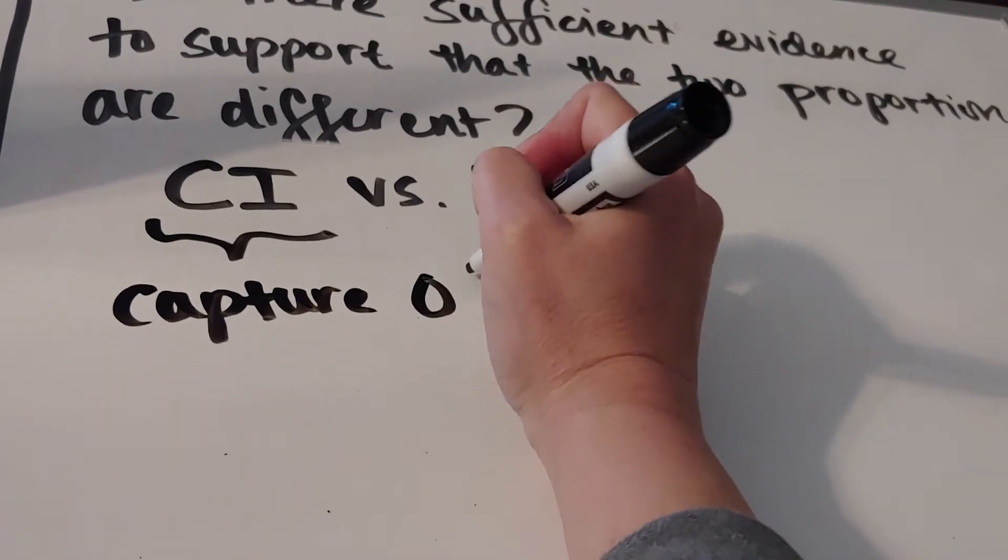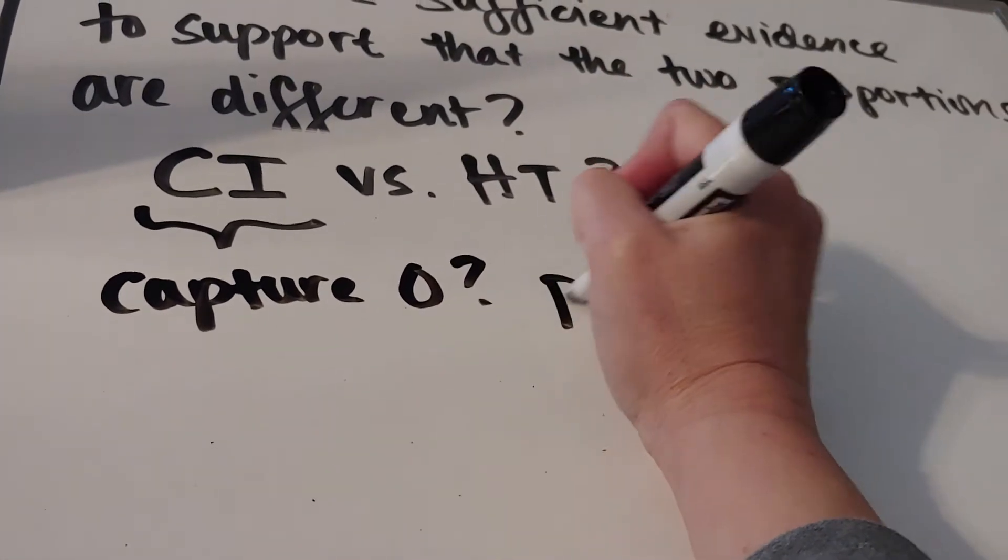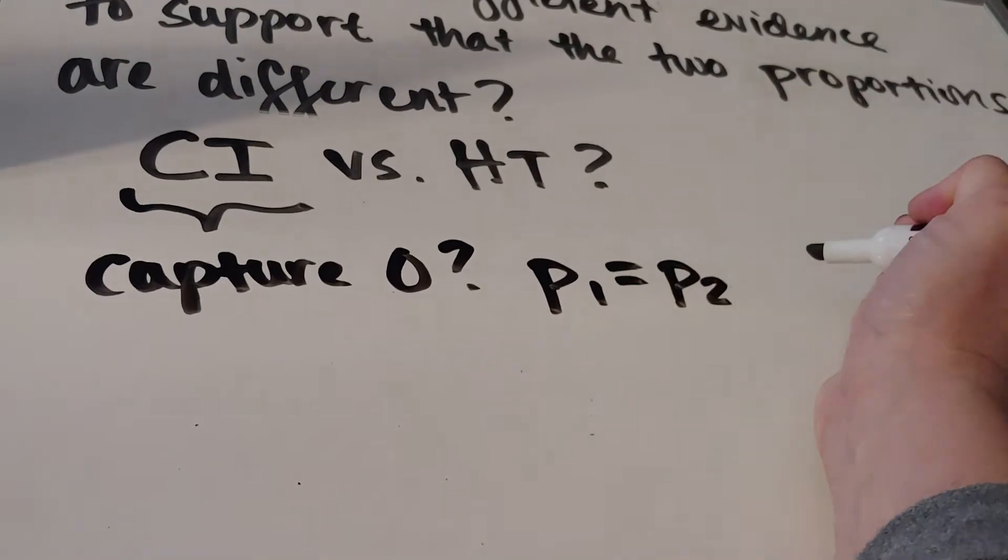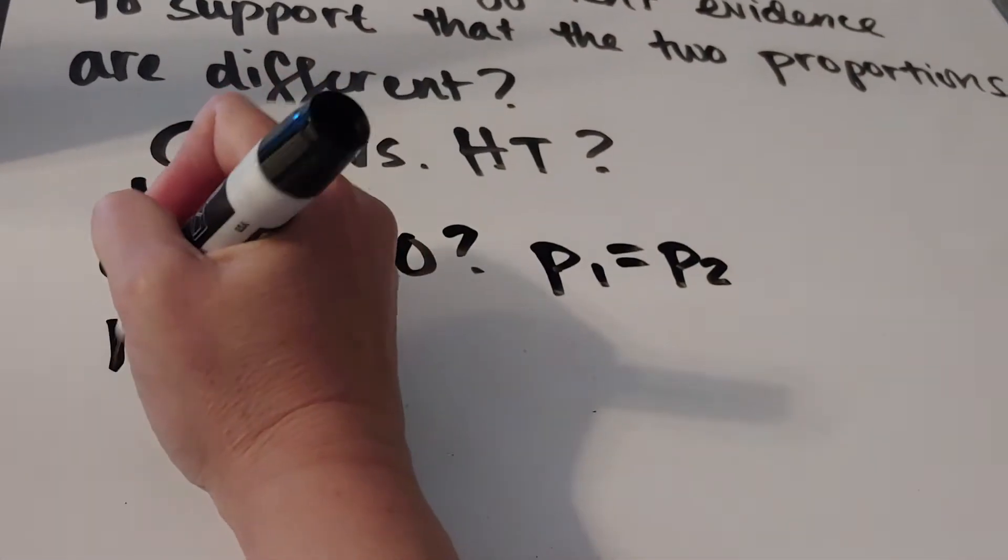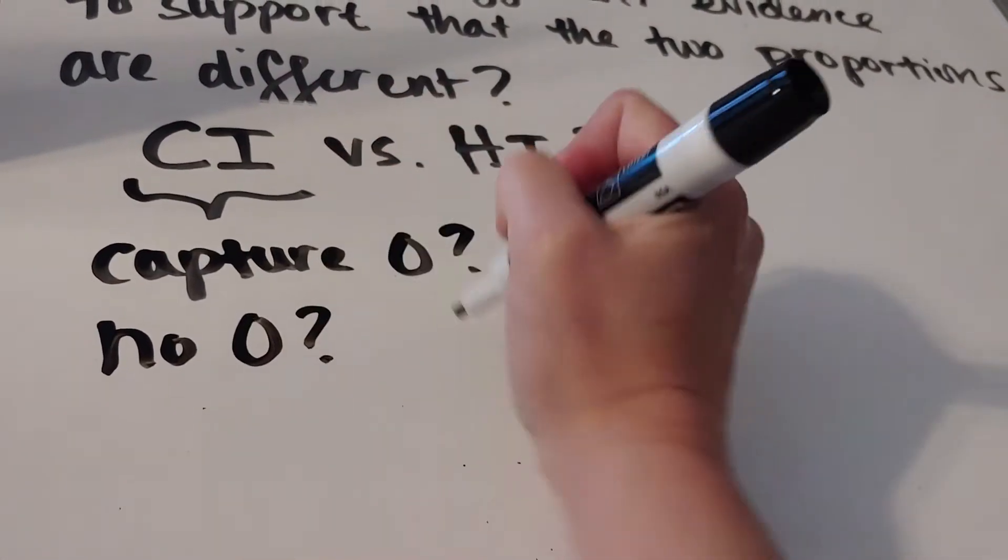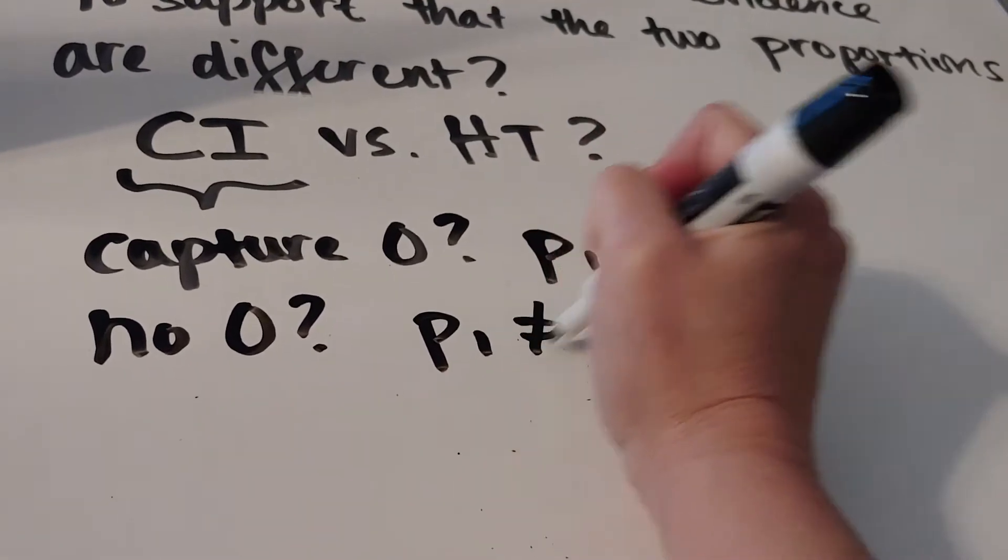If I capture zero in my confidence interval, it means that the two are statistically the same. If I don't capture zero, it means that the two are, in fact, different.